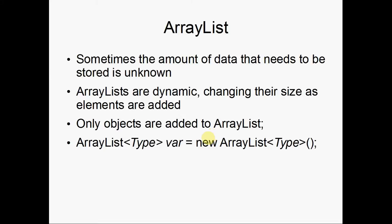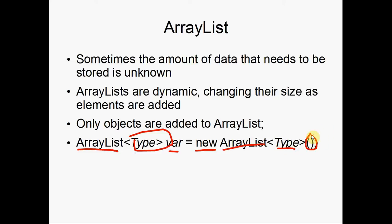Sometimes you don't know how much data you have, so an array list is a way to store an unknown amount of data — they dynamically change their size as you go. The syntax is as follows: you have ArrayList, then you have a type in angle brackets like Integer or String, the variable name of the list, an equal sign, new, once again ArrayList, the same type, and then open and close parentheses.